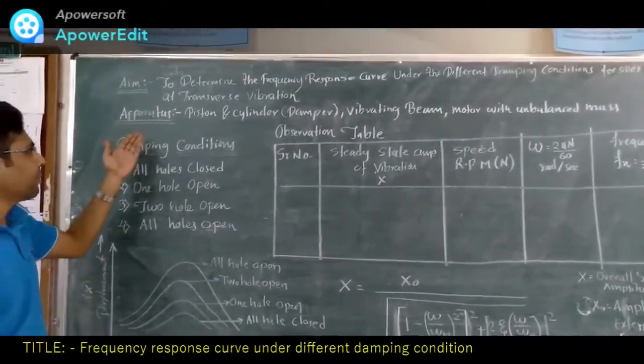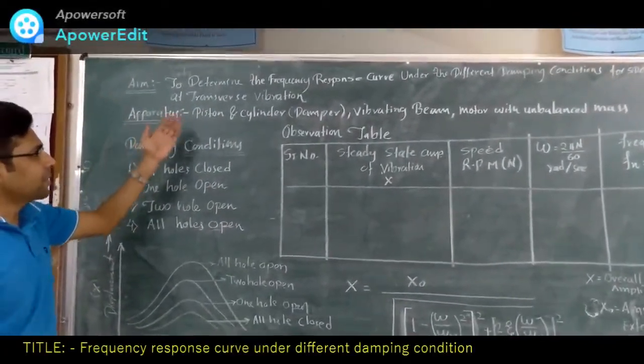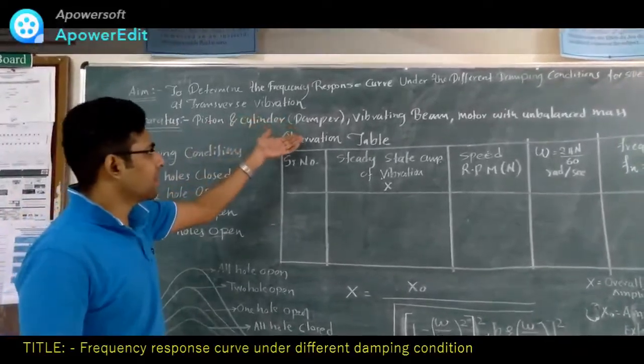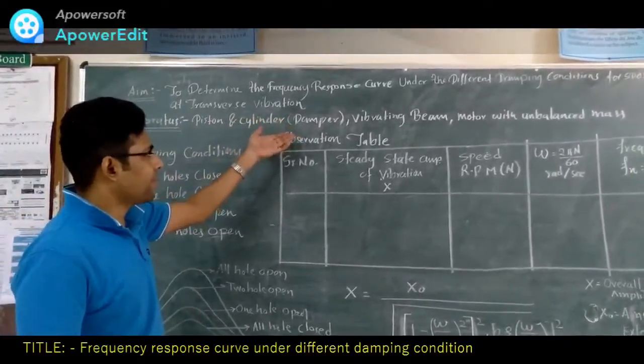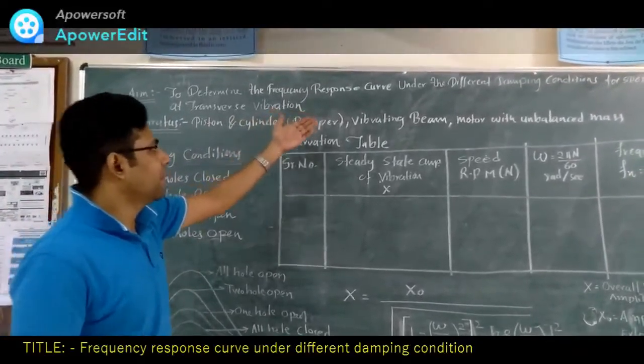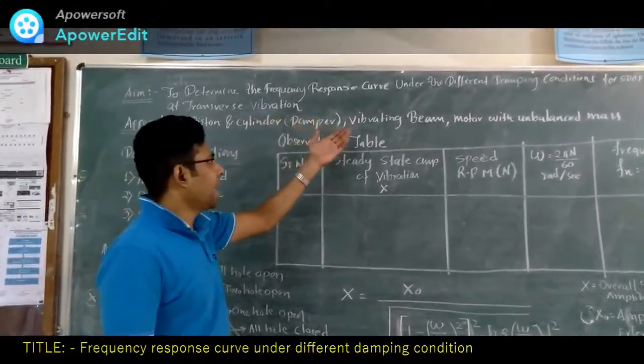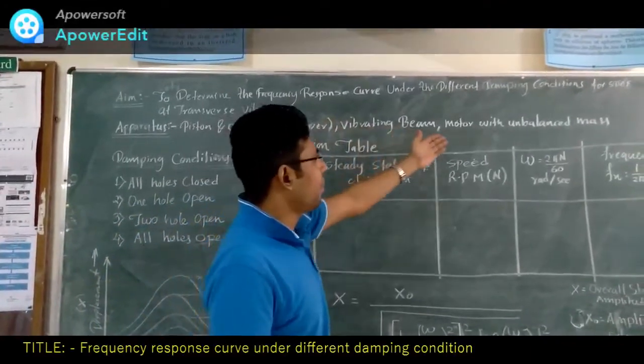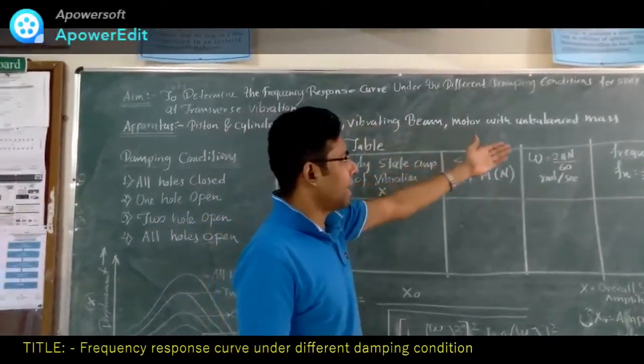The apparatus required for this experiment is a piston and cylinder which is combined with an oil seal, a vibrating beam, and a motor with unbalanced mass.